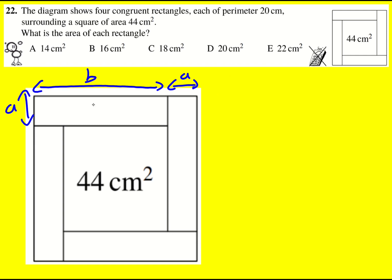But now we have the perimeter, it's going to be A plus A plus B plus B, it's actually going to be 2A plus 2B, and that's equal to 20, which means A plus B is equal to 10.